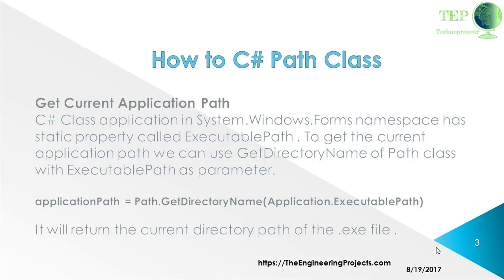To get the current application path, a C# Windows Forms application in the System.Windows.Forms namespace has a static property called ExecutablePath. To get the current application path, we can use GetDirectoryName of the Path class with ExecutablePath as a parameter — for example: applicationPath = Path.GetDirectoryName(Application.ExecutablePath). It will return the current directory path to the exe file.